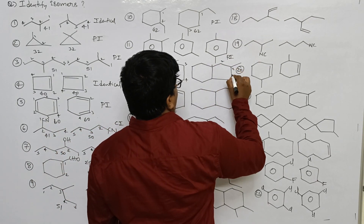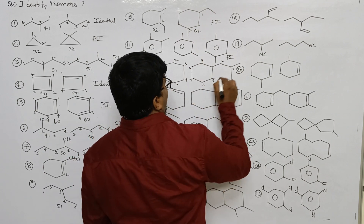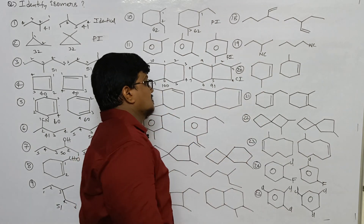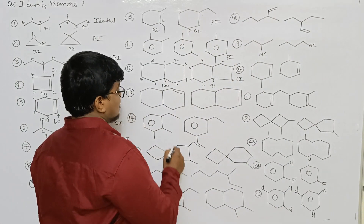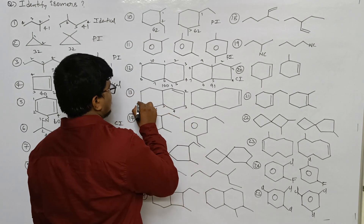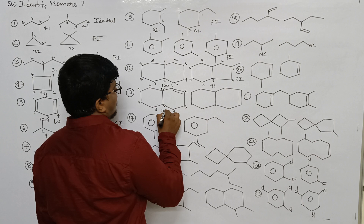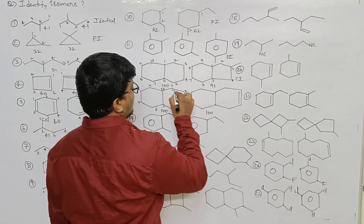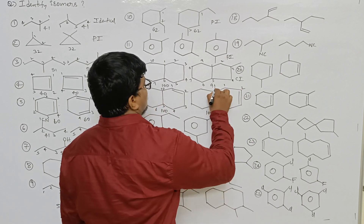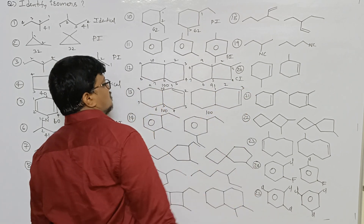Counting the second structure: one through seven on main chain. First position here, second position there — not second, it is the third position. These two are being compared.